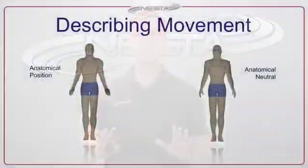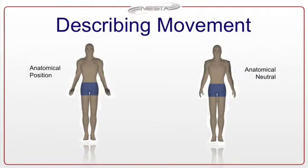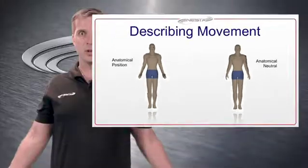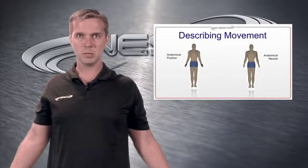In order to really understand how the body moves, we have to get a couple of terms down so we can describe movement properly. The first place we're going to start is something called anatomical position. As you can see from the picture, that's just a standing position — feet straight ahead with the palms turned forward. This anatomical position is basically the starting place for how we describe human movement, and it's been around for thousands of years.